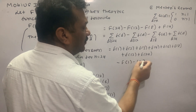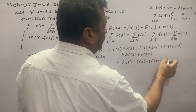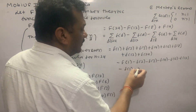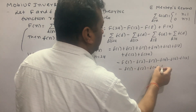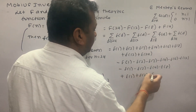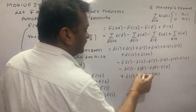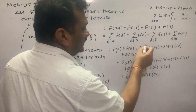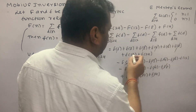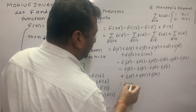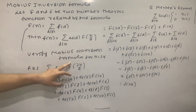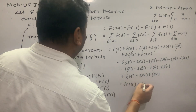The divisors of 24 are 1, 2, 3, 4, 6, 8, 12, 24. Divisors of 12 are 1, 2, 3, 4, 6, 12. Divisors of 8 are 1, 2, 4, 8. Divisors of 4 are 1, 2, 4. After combining the terms F(1), F(2), F(3), F(4), F(6), F(8), F(12), F(24) with appropriate signs, the result equals F(24). Therefore the right hand side equals the left hand side, and the Möbius Inversion Formula is verified for n equals 24.